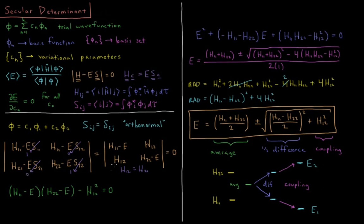This simplifies our determinant equation to h11 minus e, h12, h12 times h22 minus e. I've also substituted in the fact that h12 equals h21 because the Hamiltonian is a Hermitian operator.